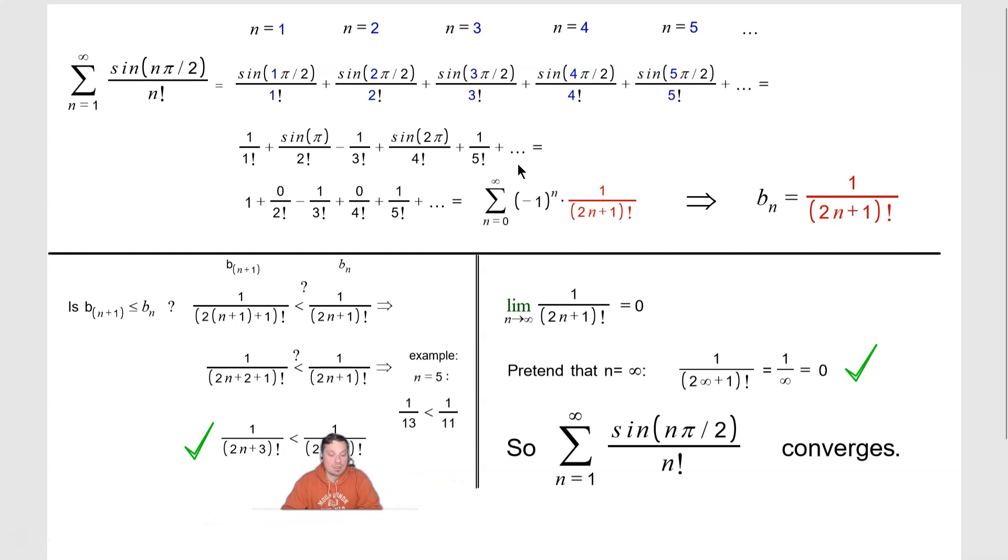And over here, I would have 1 over 2 times 5 which is 10, 10 plus 1 is 11. So it would be 1 eleventh. And you can see, you can check on the calculator, 1 thirteenth is clearly less than 1 eleventh. So this part is checked to make sure that b sub n plus 1 is less than or equal to b sub n.